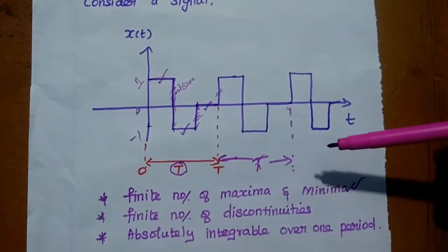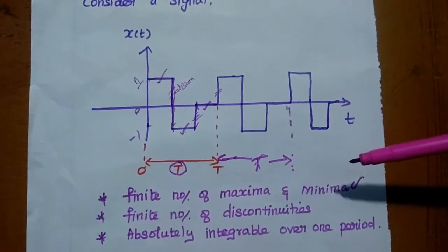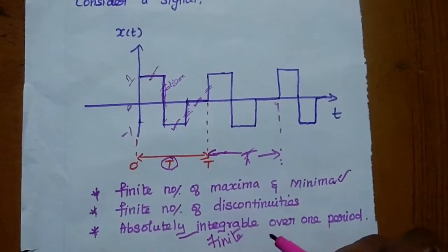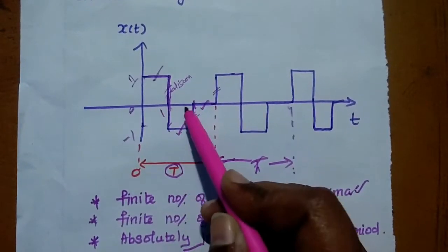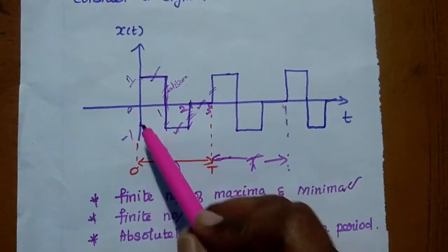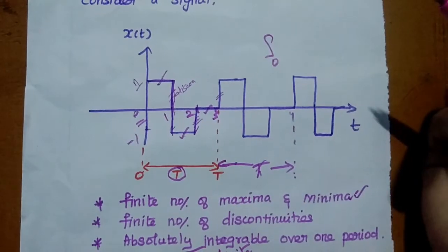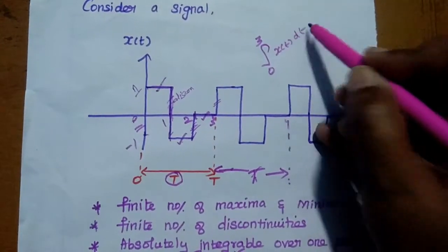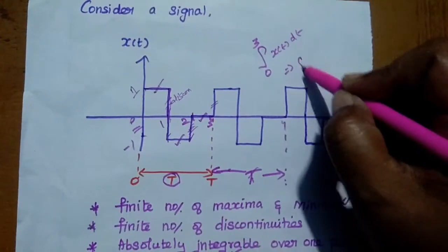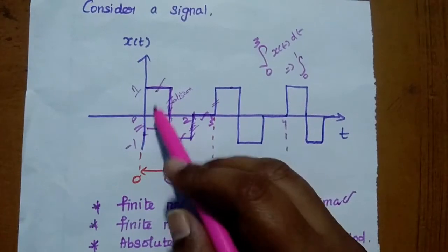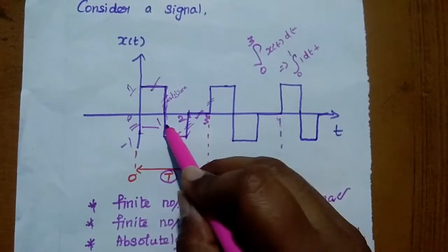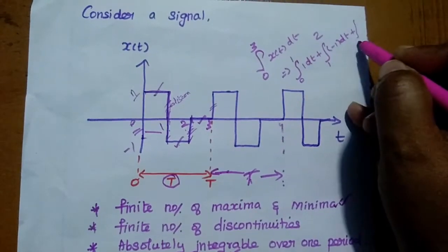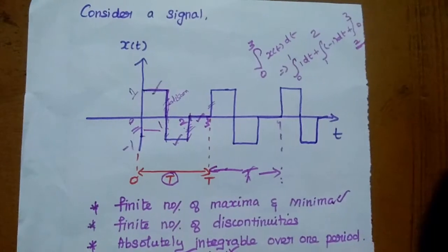The third condition is the signal should be absolutely integrable over one period. Absolutely integrable means it represents finite value. Here we can easily take the integration over one period. The starting value is 0 and the last value is 3. The upper limit is 3. Given signal X(t) dt. Here we can have three levels. We can write 0 to 1, its value is 1 into dt. Plus 1 to 2, the value is minus 1. Plus 2 to 3, its value is 0. So we can simply leave this value as 0.